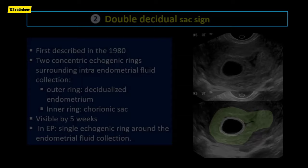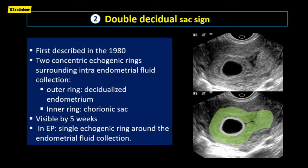The double decidual sac sign was first described in 1980. It is the expanding gestational sac, defined as two concentric echogenic rings of tissue surrounding an intra-endometrial fluid collection in an early intrauterine pregnancy.